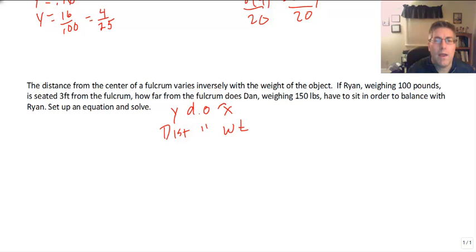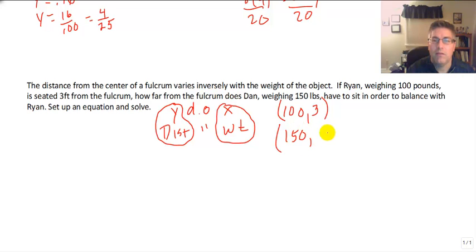So weight or x is our independent variable and distance is our dependent variable or y. So Ryan weighing 100 pounds is seated 3 feet from the fulcrum is the ordered pair 100 comma 3. And Dan weighing 150 pounds is seated how far from the fulcrum? y.